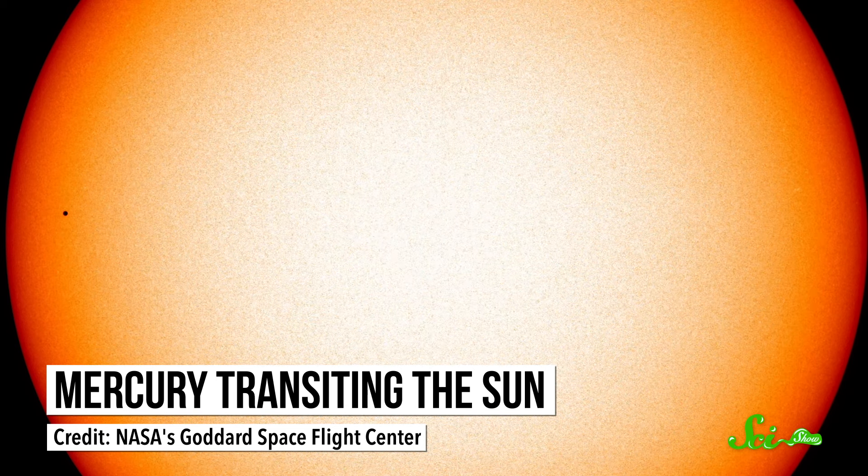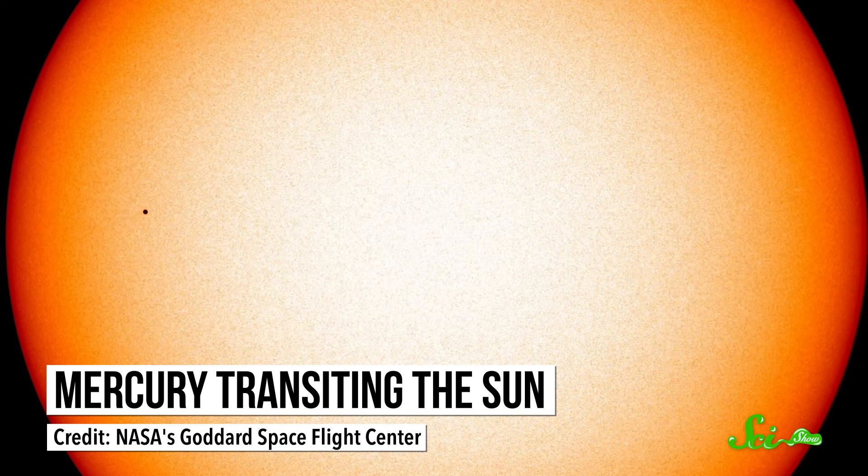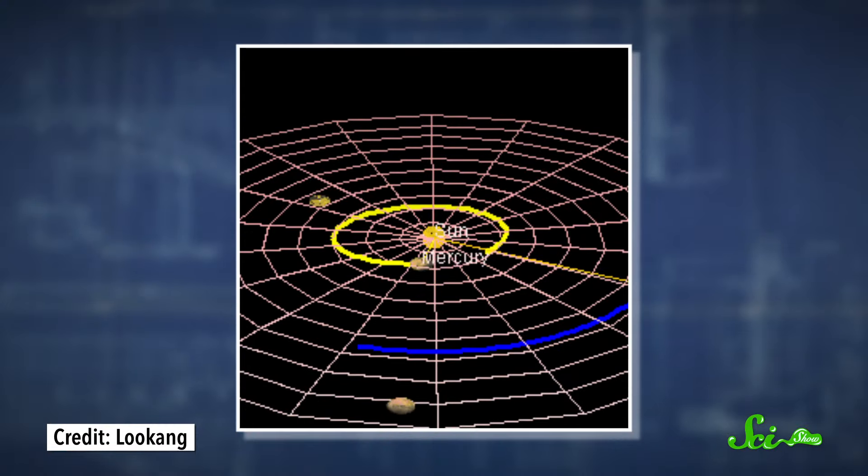But back in the mid-1800s, astronomers discovered that the planet Mercury's orbit didn't quite follow Newton's Law. Over time, the point where the planet passed closest to the Sun was happening at slightly different points in the orbit. And for a while, no one knew what to make of that.